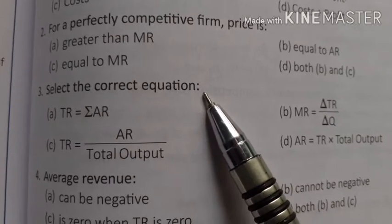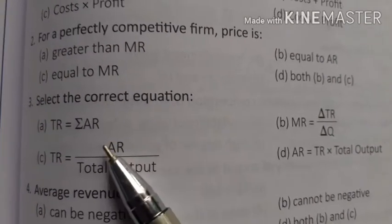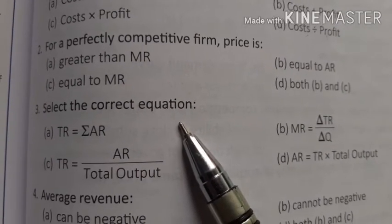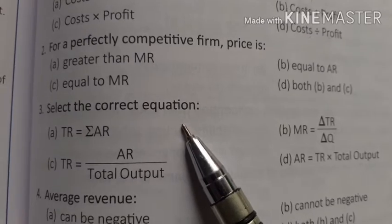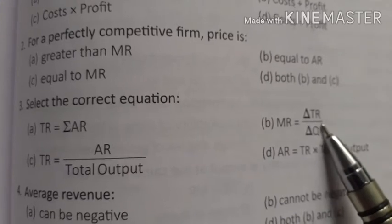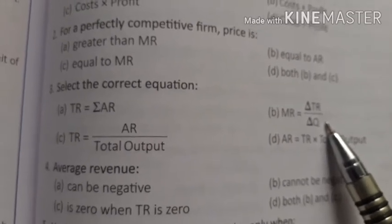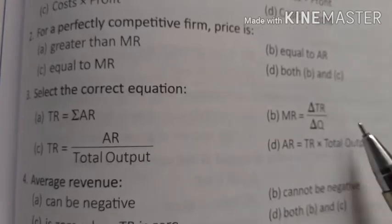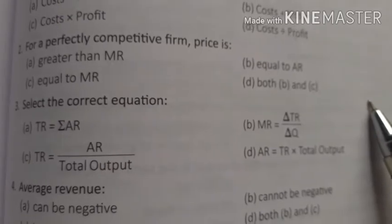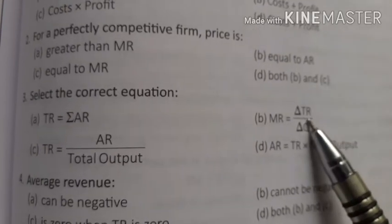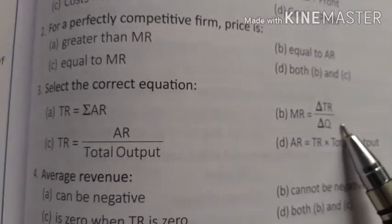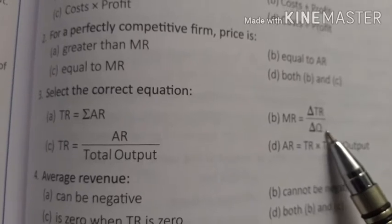Next question: select the correct equation. Option A is TR = summation of AR — that is not correct. Option B is MR = change in TR divided by change in Q. We can calculate MR as TRₙ minus TRₙ₋₁, and also as change in total revenue divided by change in total output. So B is correct.